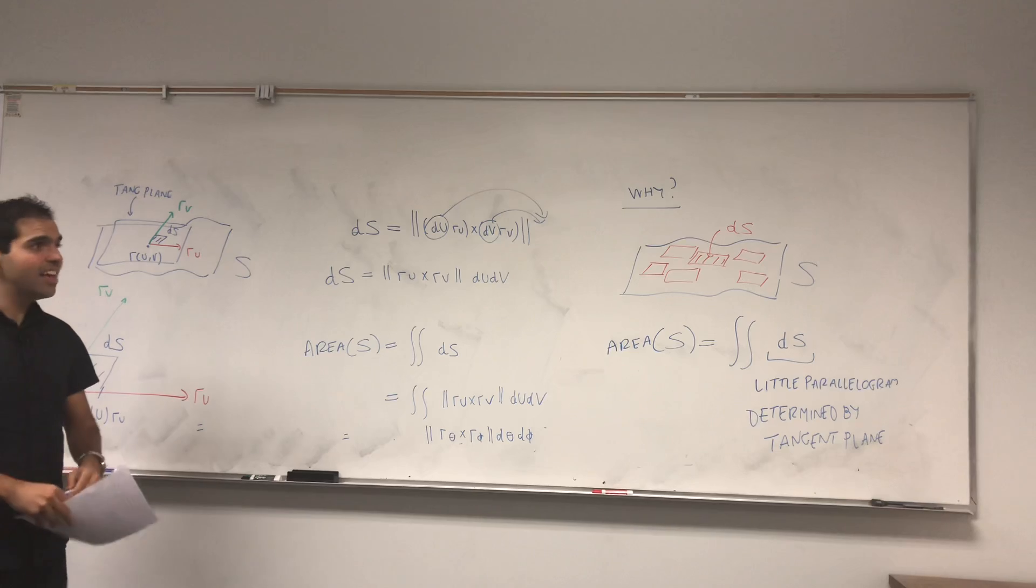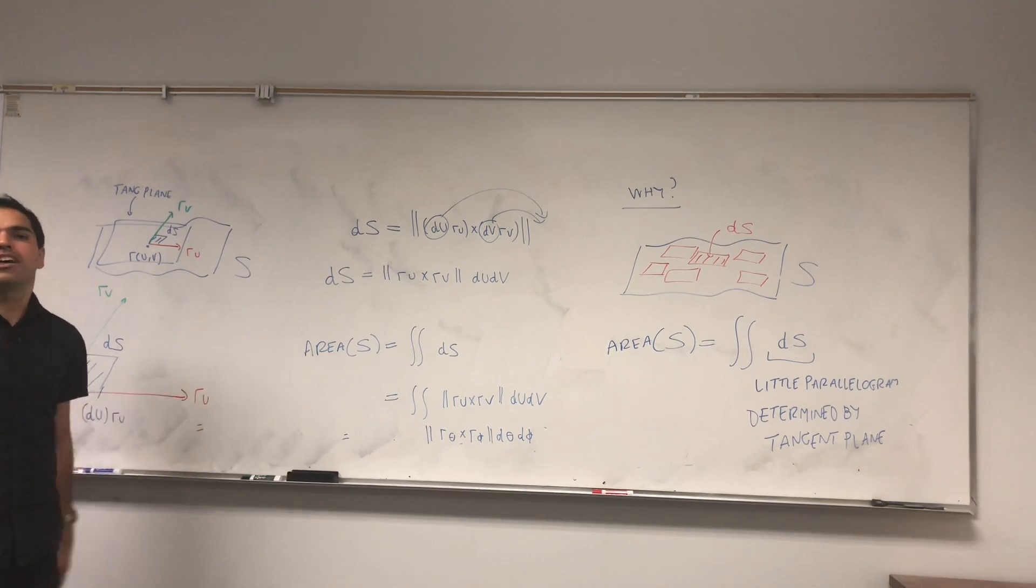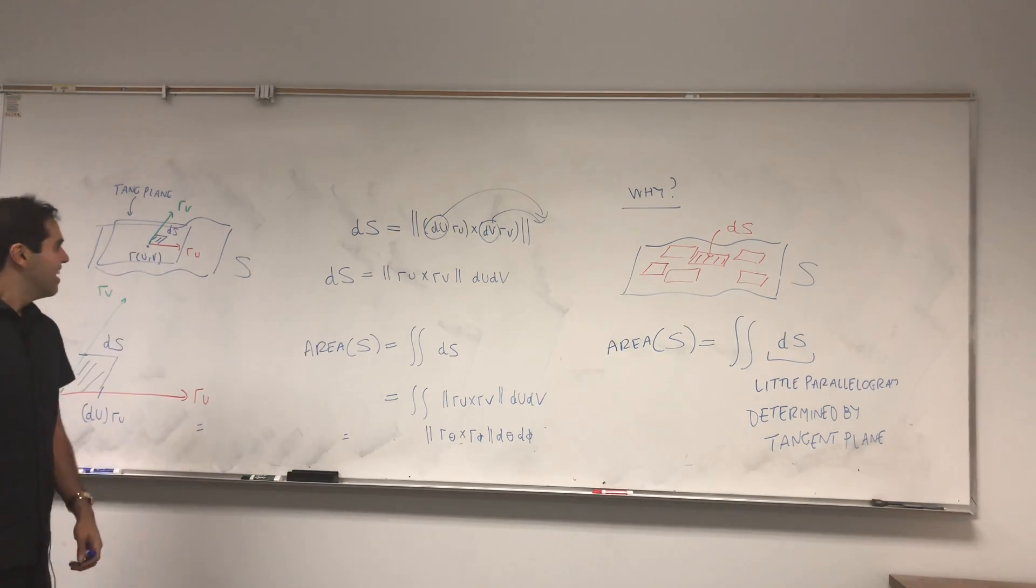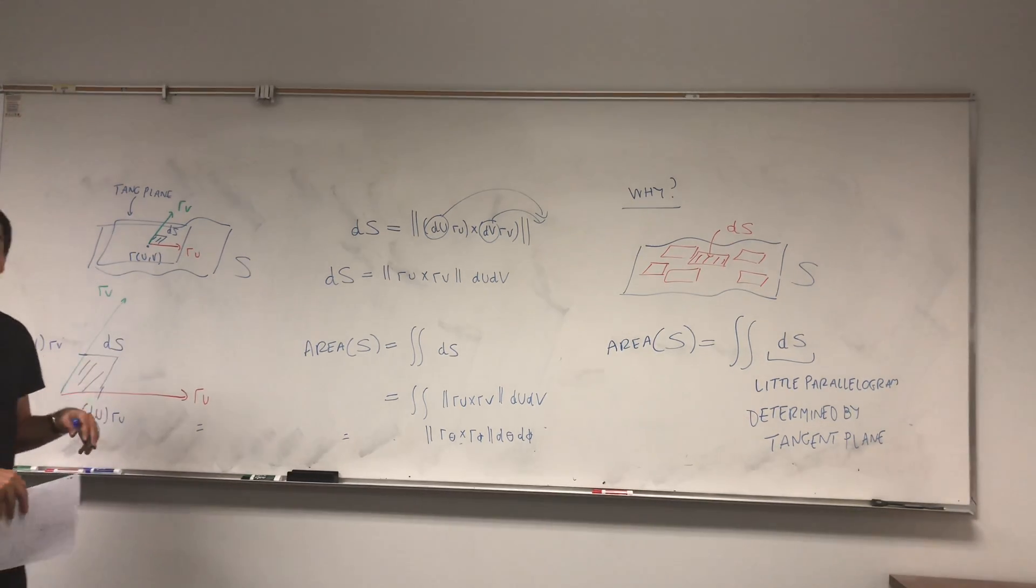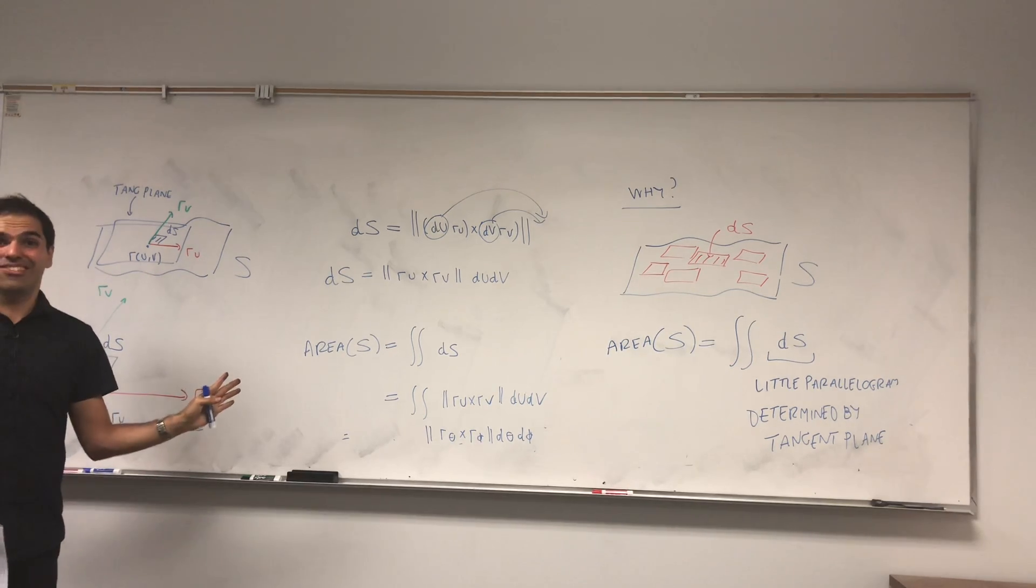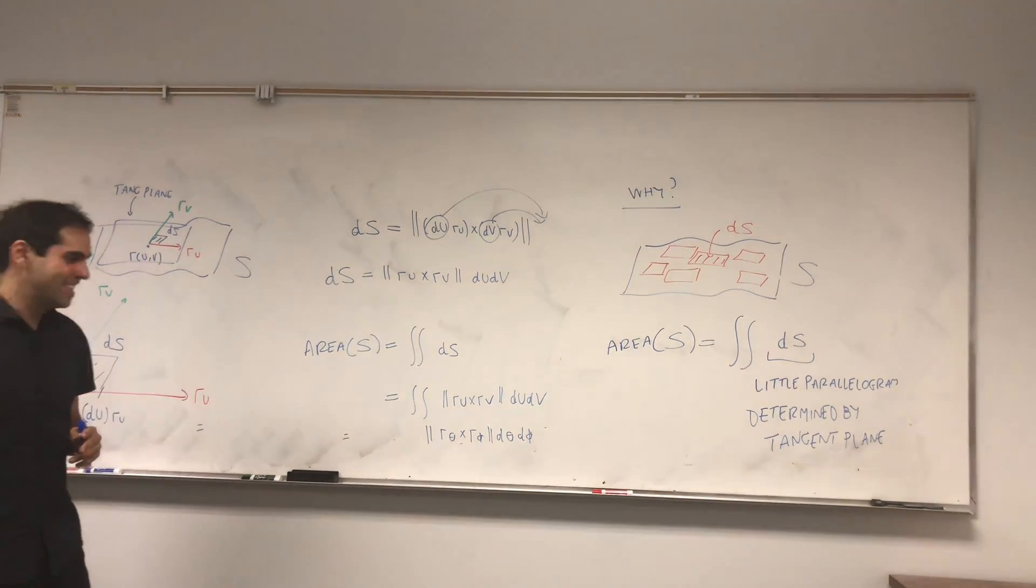And then the area of S then just becomes double integral of dS, and that's double integral of r_u cross r_v du dv. And that's exactly what we did, except we called this r_theta cross r_phi d(theta) d(phi). And that's how you get it. And it allows us really to calculate the surface area of any surface. So how cool is that? And we'll move on because we will then calculate surface integrals next time, which is essentially the same idea.